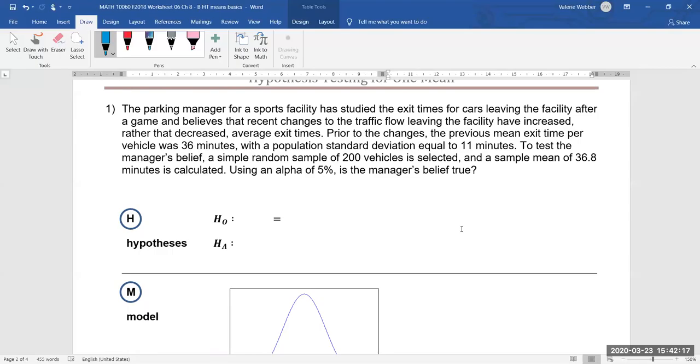Okay and we have here that prior to the changes the previous mean exit time was 36 minutes and they knew the population standard deviation was 11. So we want to test the manager's belief he studied a simple random sample of 200 vehicles and he calculated a sample mean exit time of 36.8 minutes.